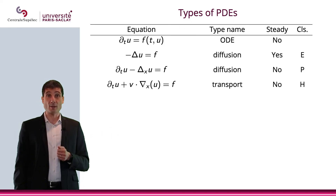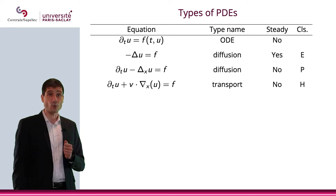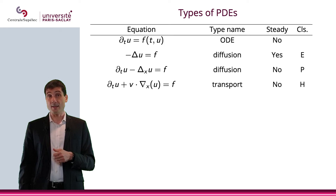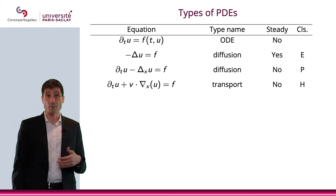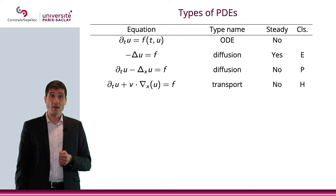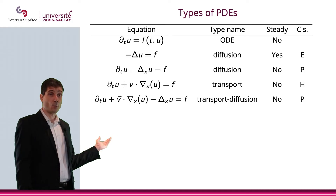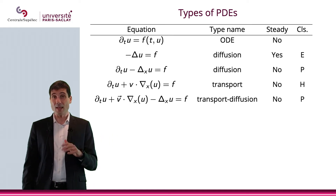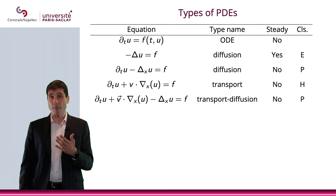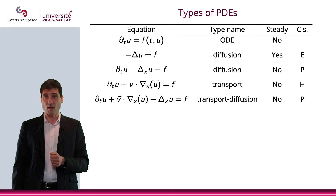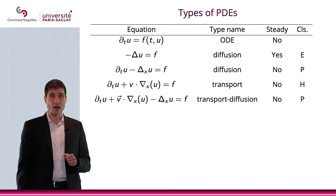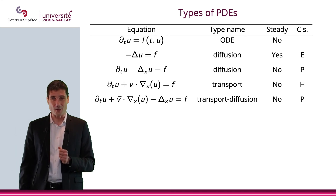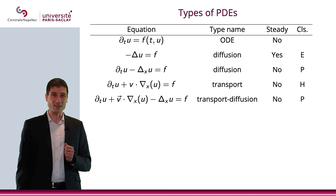Then we have the transport equation: dₜu + v · ∇u = f. It is not steady, and that would be a hyperbolic equation. Then we have the transport-diffusion equation, given here, which is not steady and which is parabolic. We'll actually talk about this in the third section of this chapter, so stay tuned — we'll get back to this equation in a few minutes.